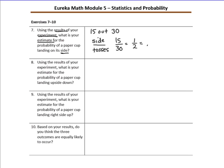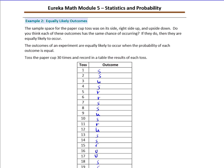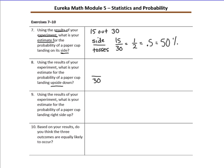We could also write it as a decimal or a percent. Number eight: using the results of your experiment, what is your estimate for the probability of a paper cup landing upside down? I count how many times it landed upside down — that was 9 times — so 9 out of 30.